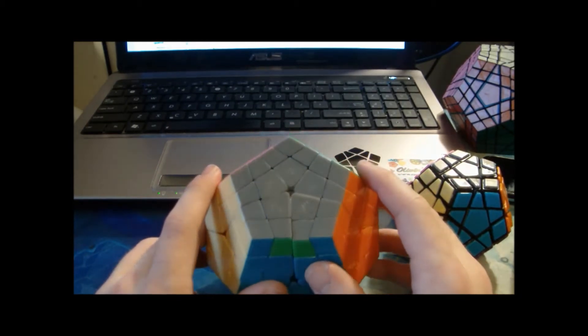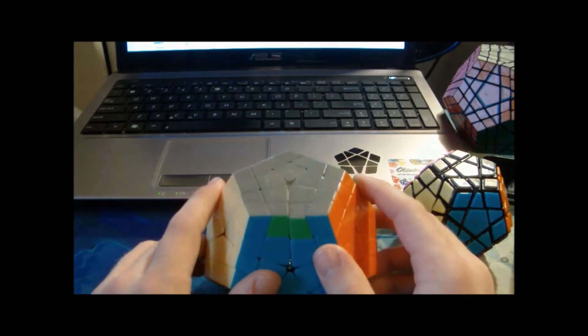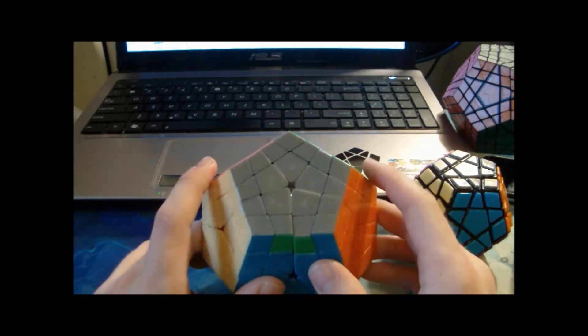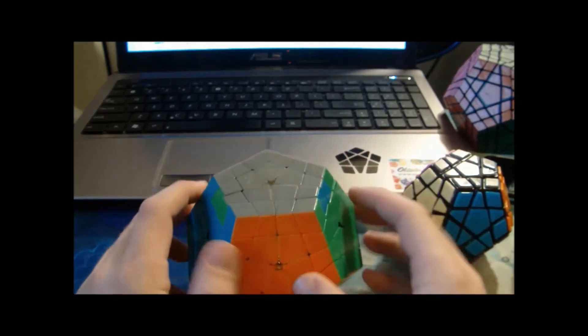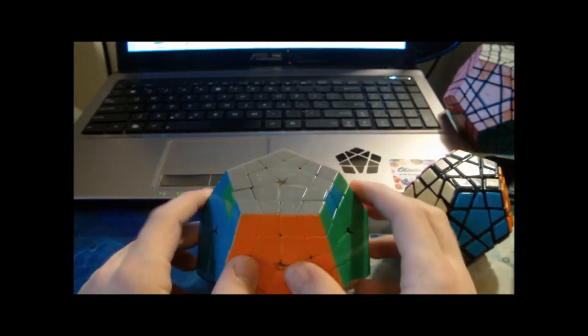There's only permutation parity, and this is the pure case where two edges are swapped across from each other.